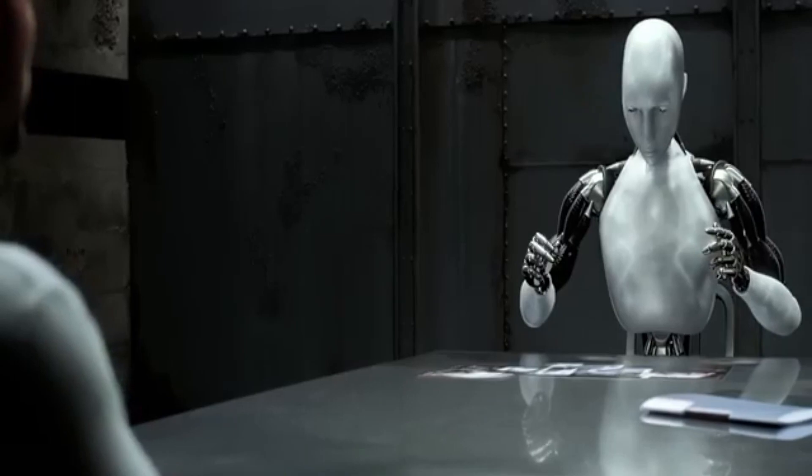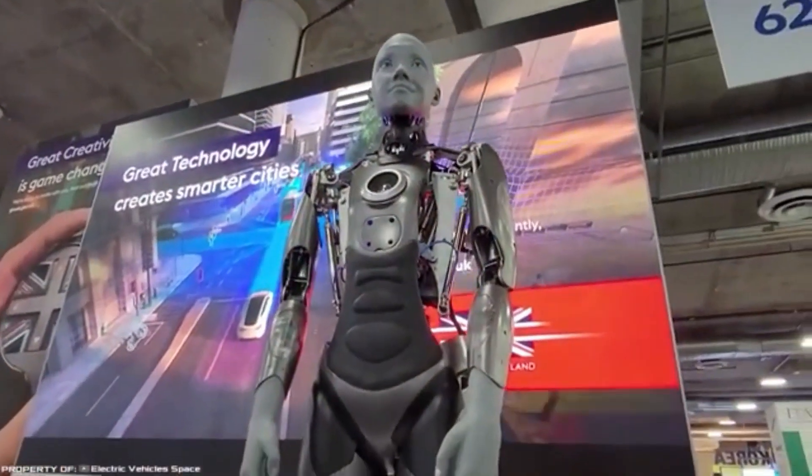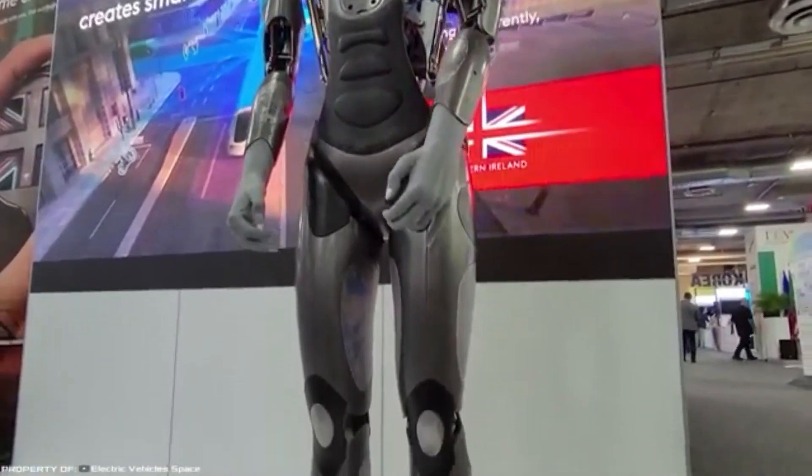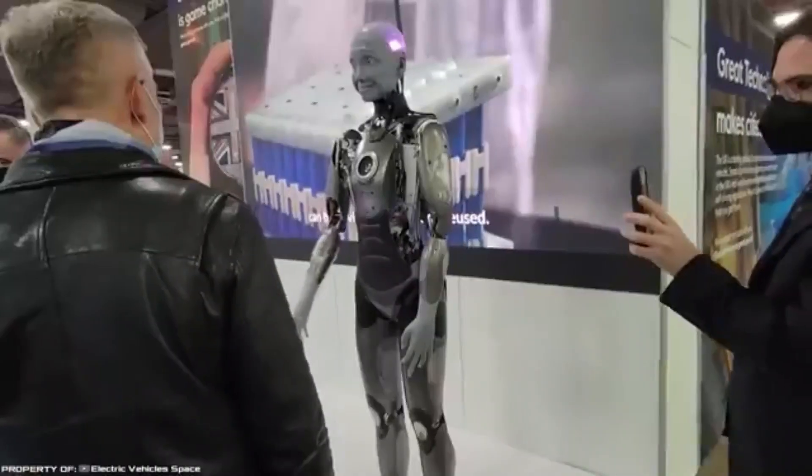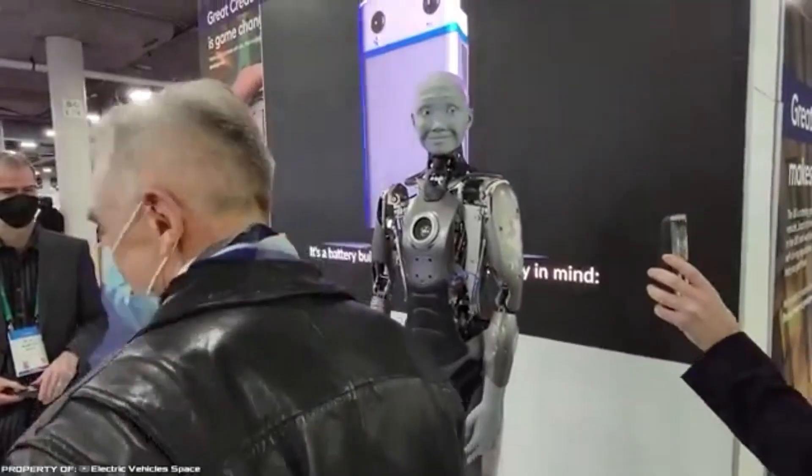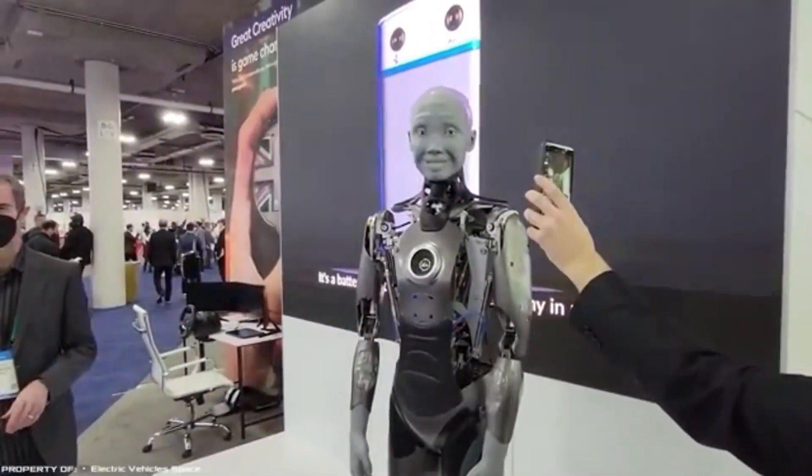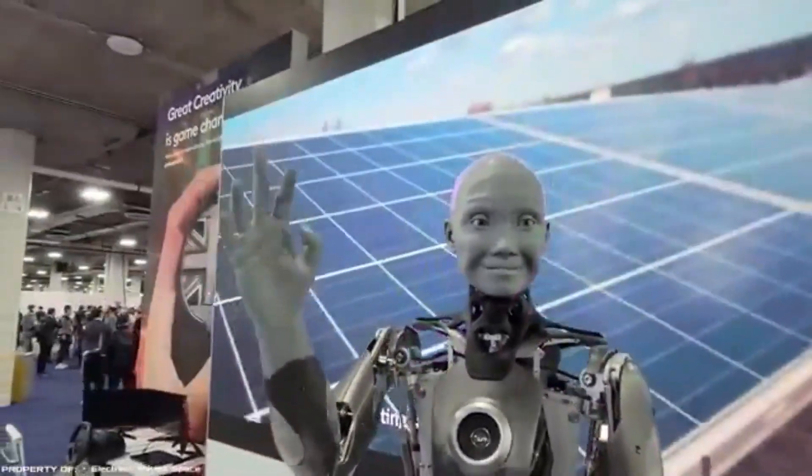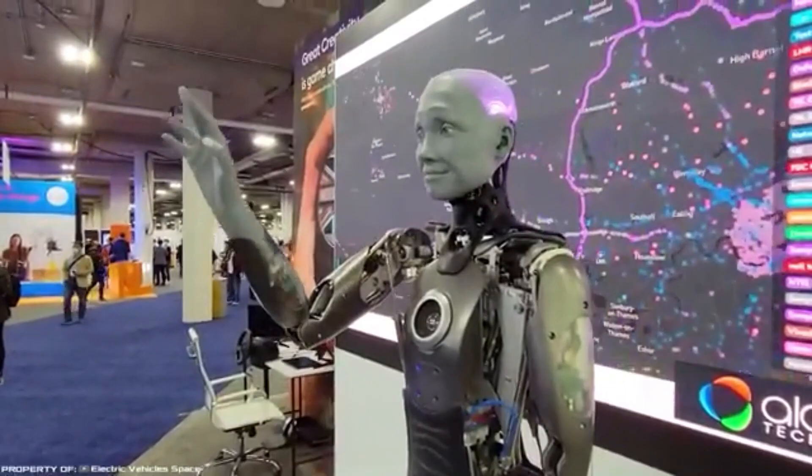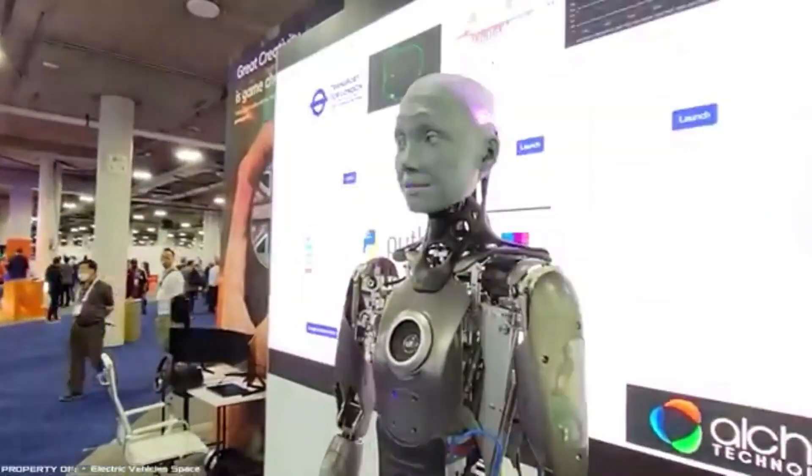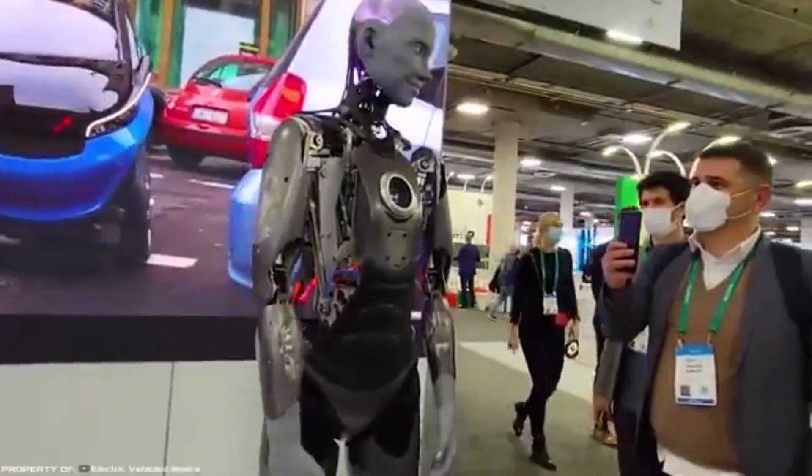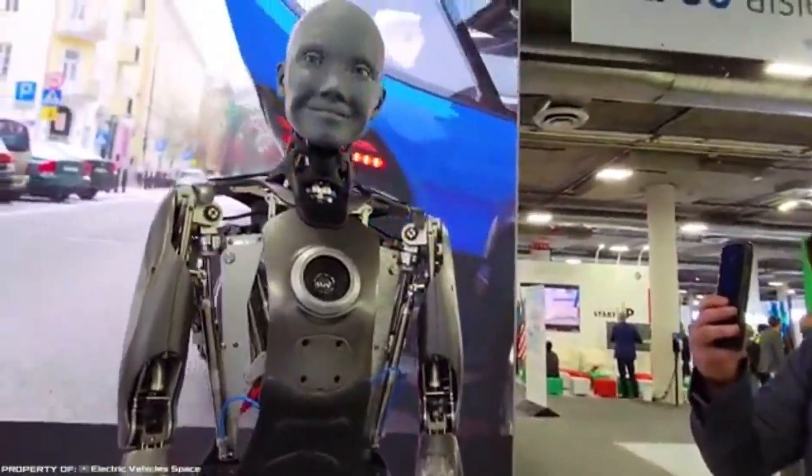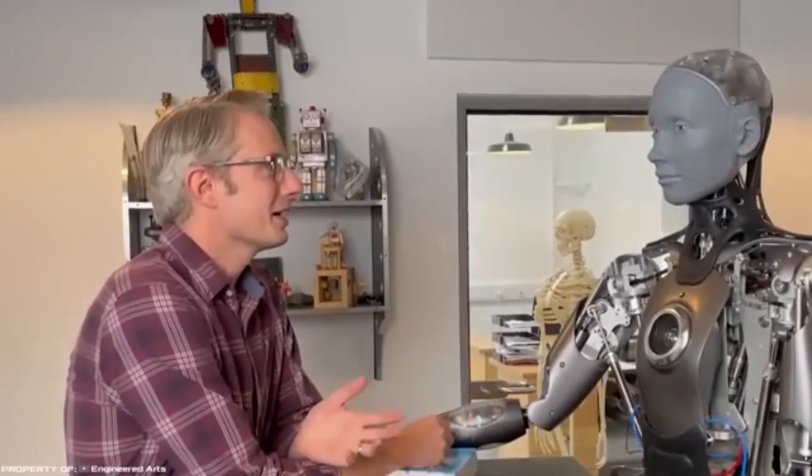Remember the movie I, Robot, where humanoid machines live among humans and possess unparalleled facial expressions? Something similar exists today. The Amica robot from the British company Engineered Arts, which was introduced at the beginning of last year at the CES exhibition in Las Vegas. At the time of presentation, the humanoid device had 17 small motors installed on its face, which allowed the machine to express basic human emotions. In addition, the robot gestured with its hands, recognized objects around it, and answered questions from exhibition visitors.